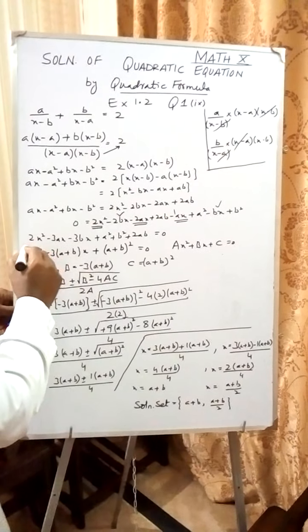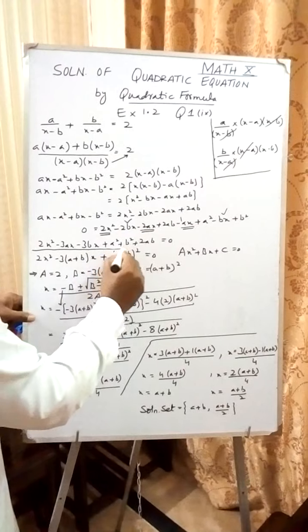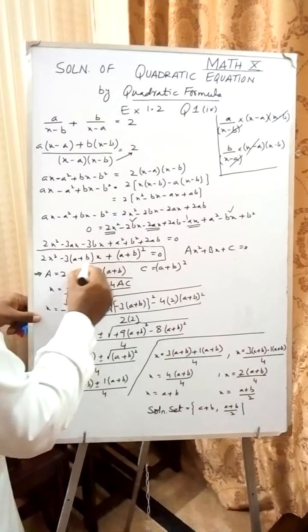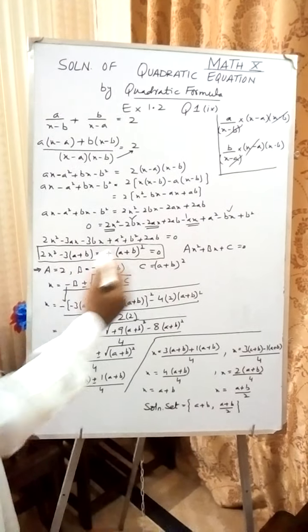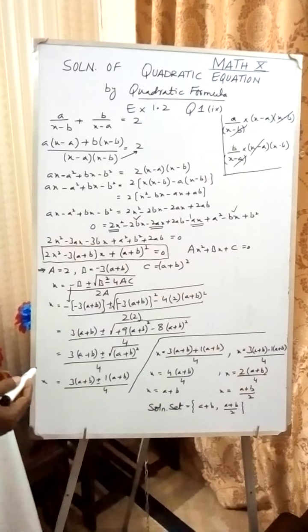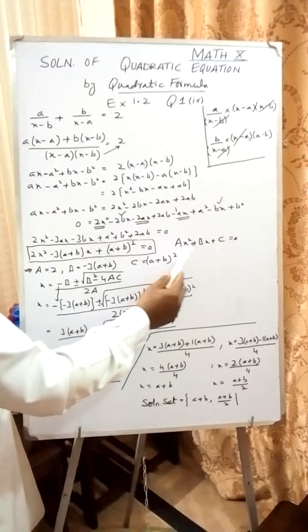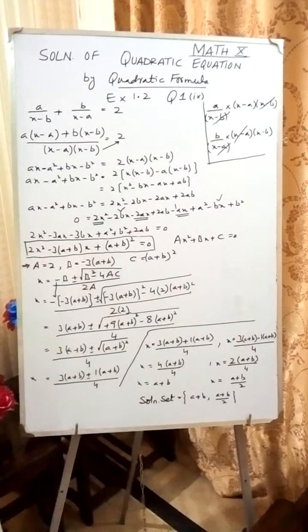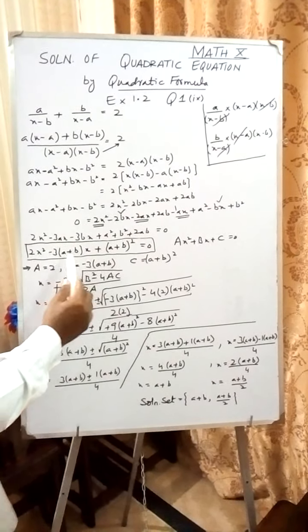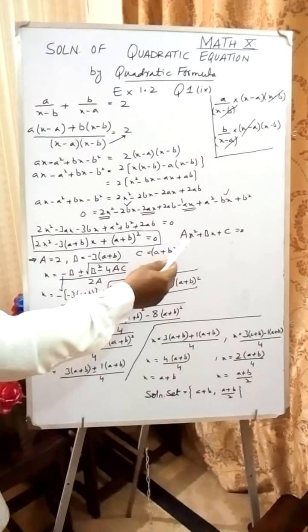So this is the equation basically that we have obtained here in standard form. Now I will compare this equation with the standard quadratic equation: Ax² + Bx + C = 0. Here I have taken A, B, and C as capital because small a, b, c are already used.